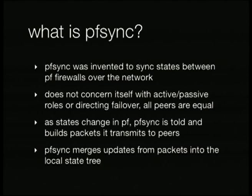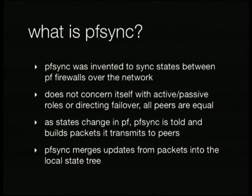PFSync was invented around 2002 when Mickey did the first commit to synchronize states between PF firewalls over the network. It doesn't concern itself with active or passive roles — all firewalls are equal. If you get a change, it tells the other one; if it receives a change, it merges it into the local state tree. It really doesn't care who gets the traffic. As states change in PF, PFSync is told, it builds packets and transmits to peers, and PFSync merges updates from packets into the local state tree. PFSync also tries to mitigate the number of updates it sends — because a packet goes through PF twice, you'd get two PFSync updates per forwarded packet without mitigation, which would triple the packets per second the firewall has to process.